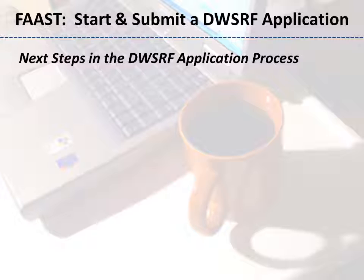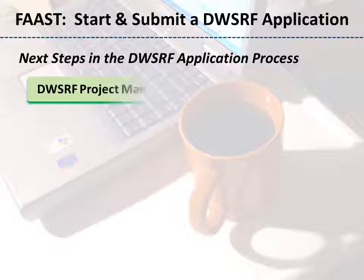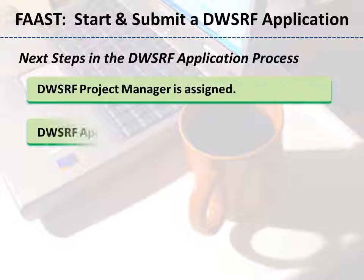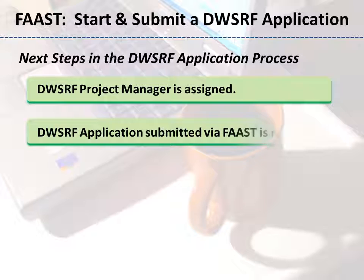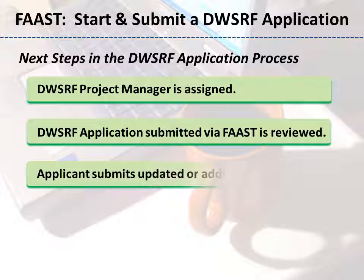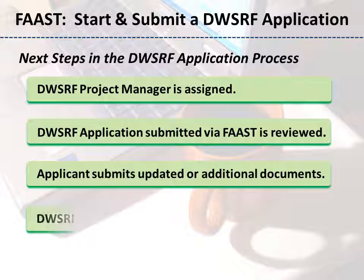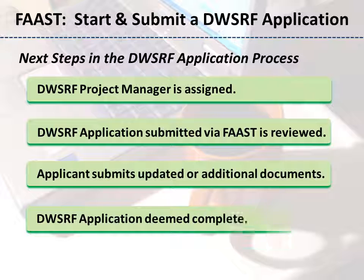The next steps in the DWSRF application process include a DWSRF project manager being assigned, the submitted application being reviewed by the project manager, and if the application is found to not be complete, the applicant will submit updated or additional documents in the Post Submission Attachment tab. Finally, the DWSRF application is deemed complete by the DWSRF project manager.